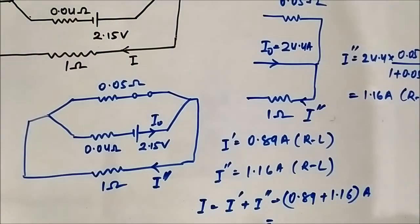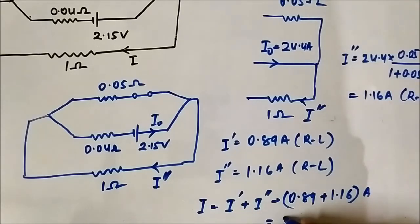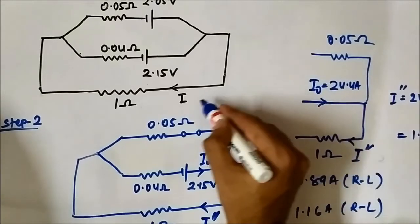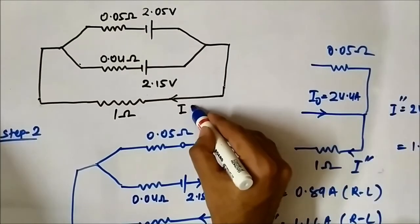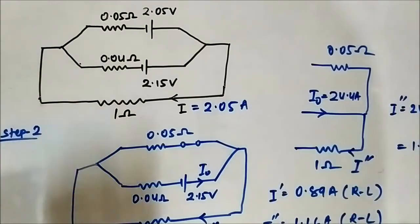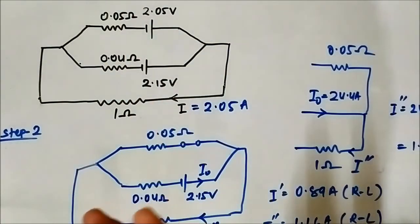i = i dash + i double dash = 0.89 + 1.16 = 2.05 ampere. So the current flowing through the 1 ohm resistor is 2.05 ampere.